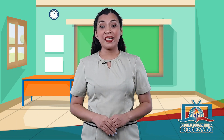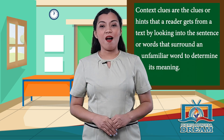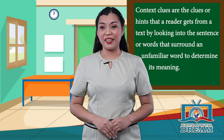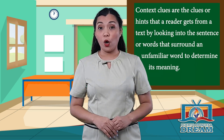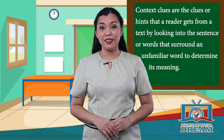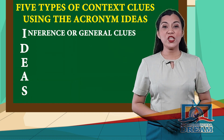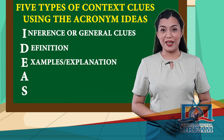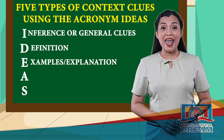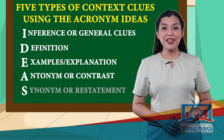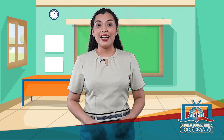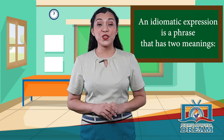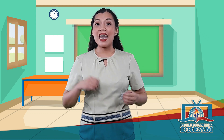Let's sum up all your learnings for today. Context clues are the clues or hints that a reader gets from a text by looking into the sentence or words that surround an unfamiliar word to determine its meaning. There are 5 types of context clues using the acronym IDEAS: I – Inference or general clues, D – Definition, E – Examples or explanation, A – Antonym or contrast, S – Synonym or restatement. An idiomatic expression is a phrase that has two meanings: a literal meaning and a figurative meaning.